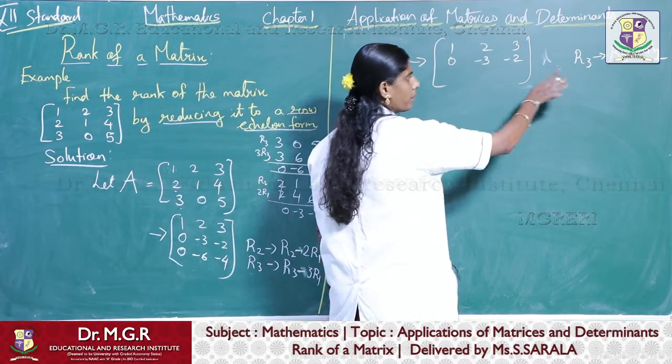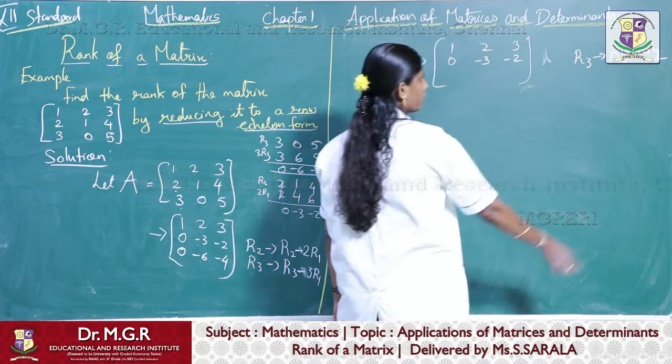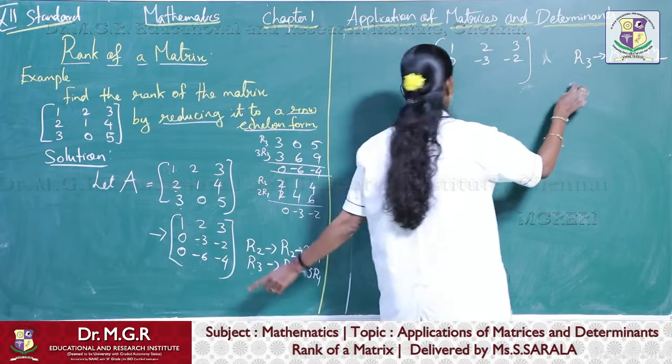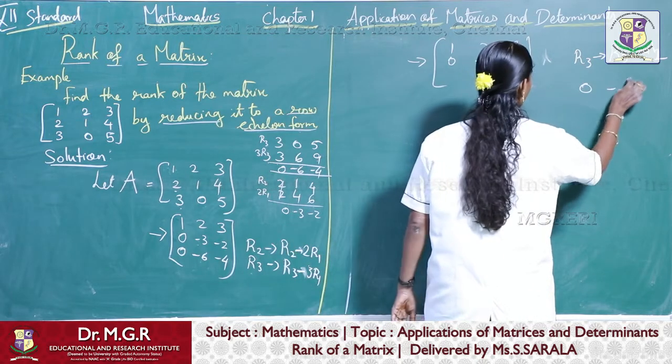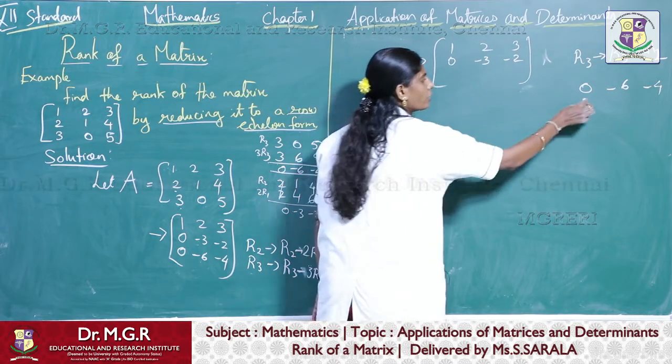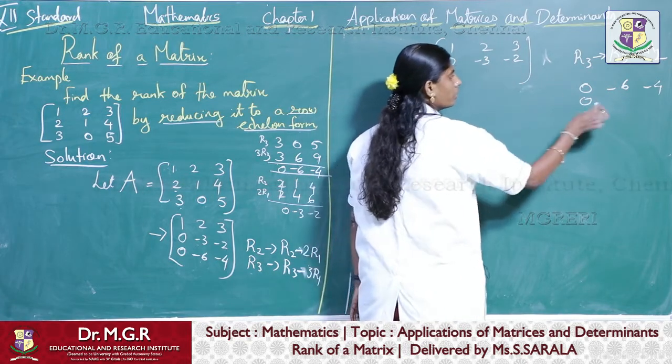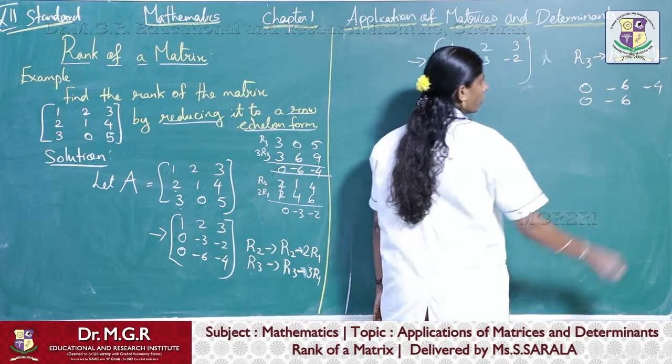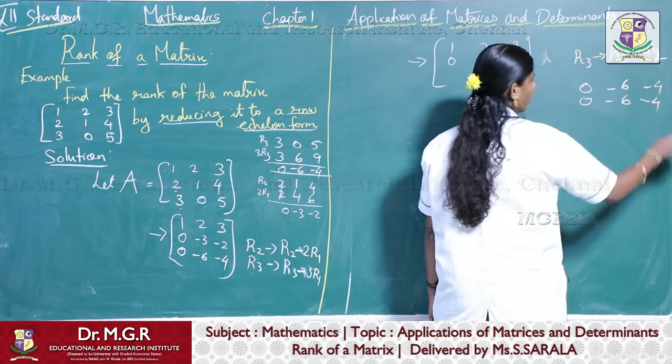The second step is the same as it is. We are going to change the third step: R3 minus 2R2. What is your R3? R3 is 0, minus 6, minus 4, and 2 times R2 is 0. So here minus 6, and this is 2 times this means you are getting minus 4.